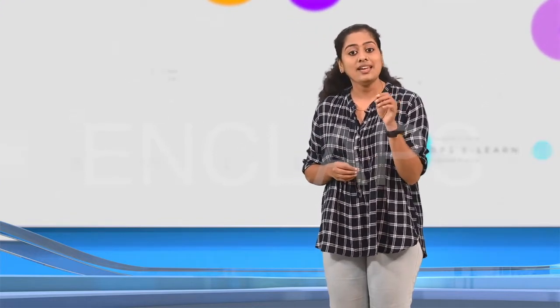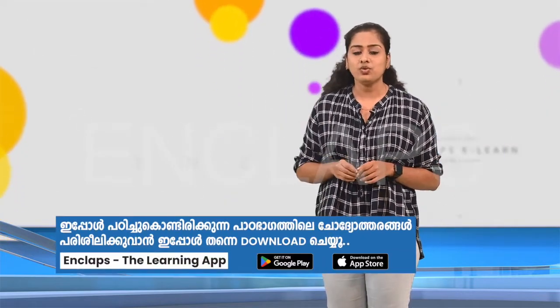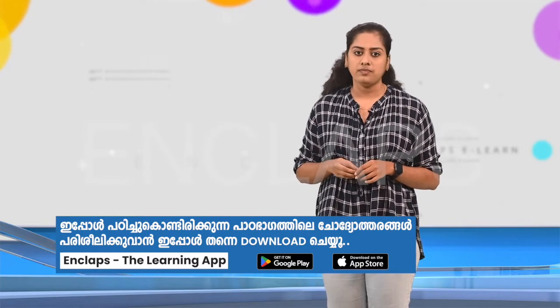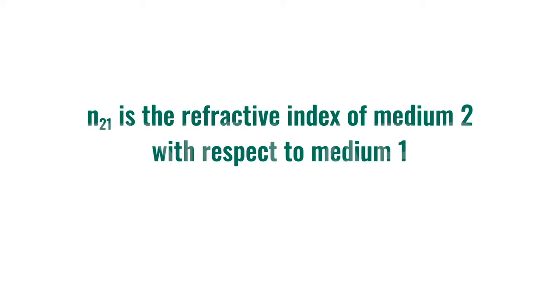That is, if medium 1 is the medium whose refractive index is to be determined, then V1 will be in the denominator. So, N12 = V2 / V1. Now, what will be the refractive index of medium 2 with respect to medium 1? It can be represented as N21. The velocity of medium 2 should come in the denominator, so N21 = V1 / V2.